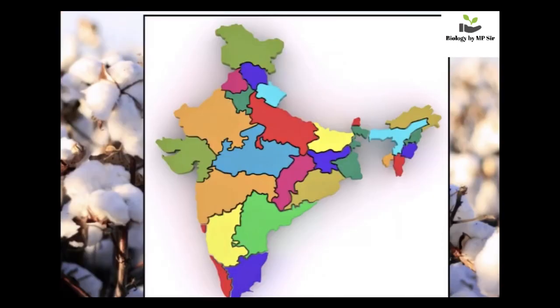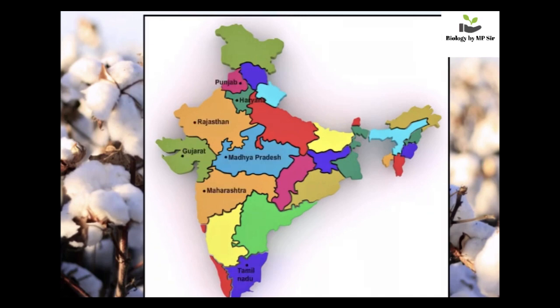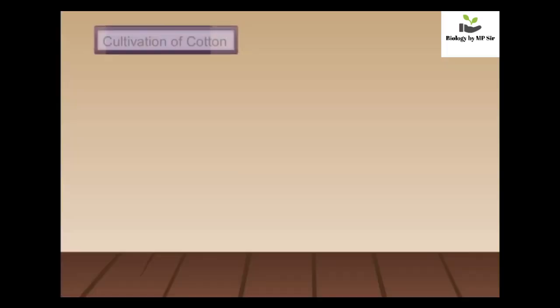In India, cotton is cultivated in the north, central and western parts — Maharashtra, Gujarat, Punjab, Haryana, Rajasthan, Tamil Nadu and Madhya Pradesh.